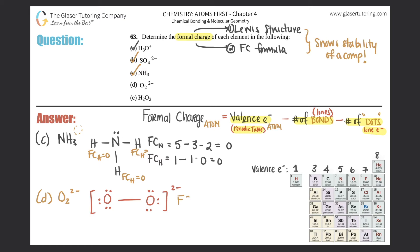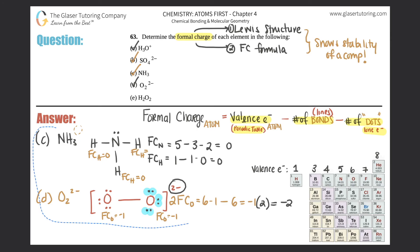Formal charge for one oxygen: valence electrons = 6. Only one bond, so minus 1. Lone electrons: 1, 2, 3, 4, 5, 6 dots, so minus 6. That gives 6 − 1 − 6 = −1. Both oxygens have a formal charge of −1, so −1 × 2 = −2, matching the overall 2− charge. Peroxide has charges, making it relatively unstable. In chemistry, unstable means it wants to react to reach a more stable state.